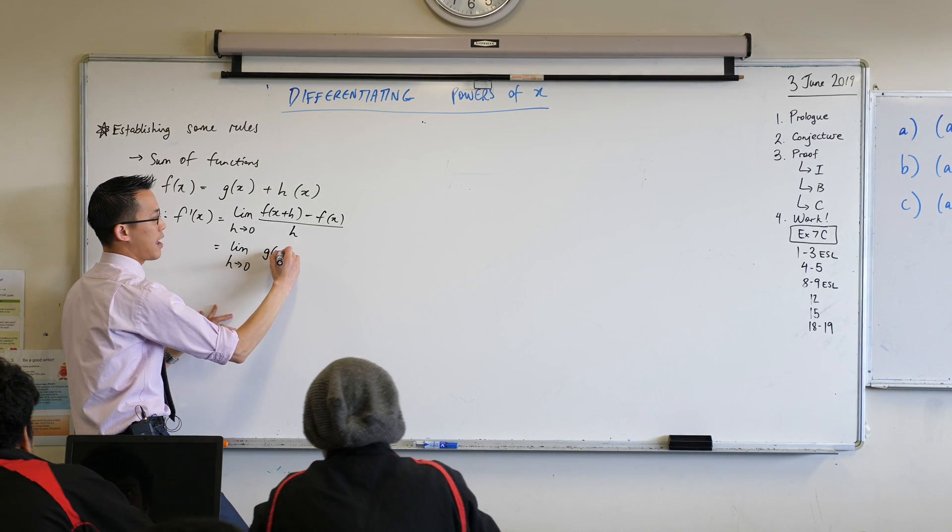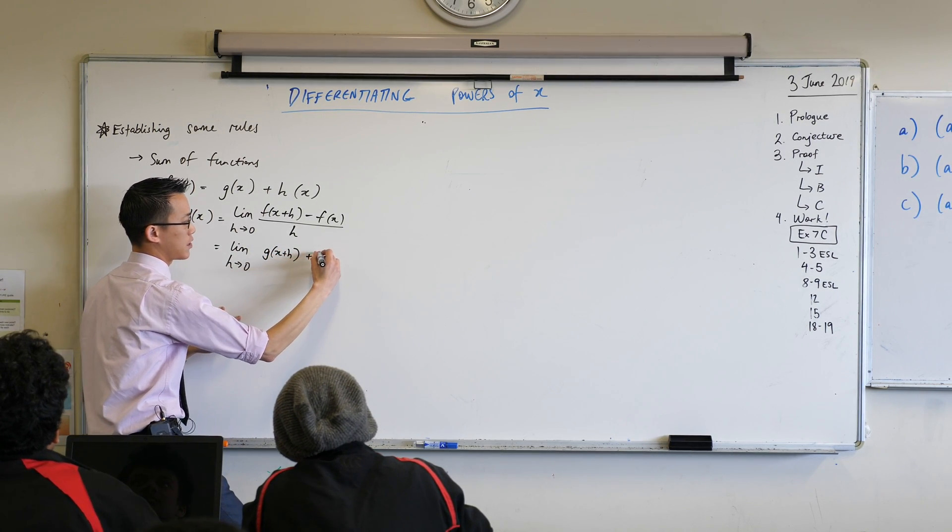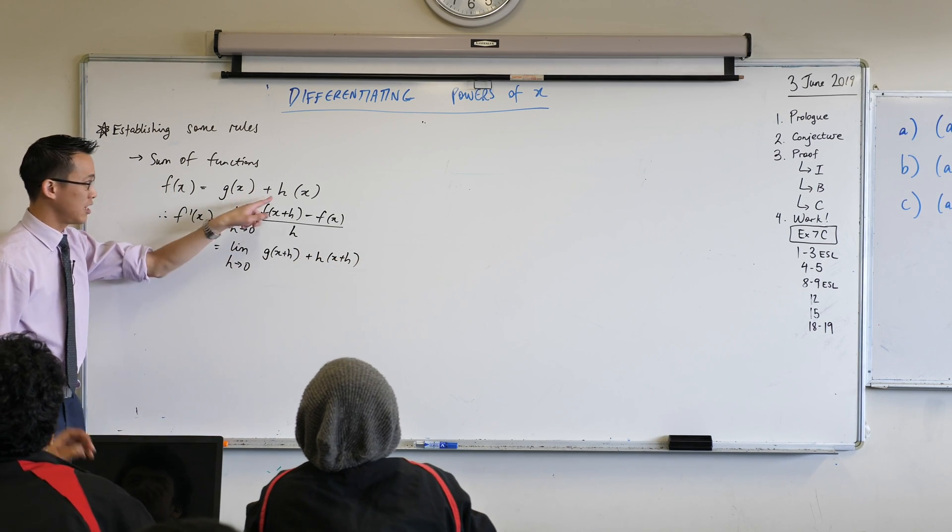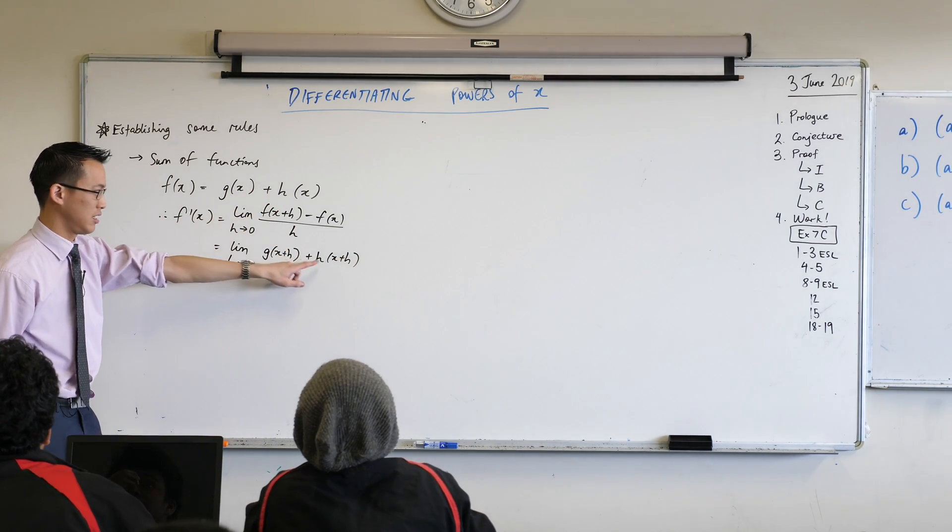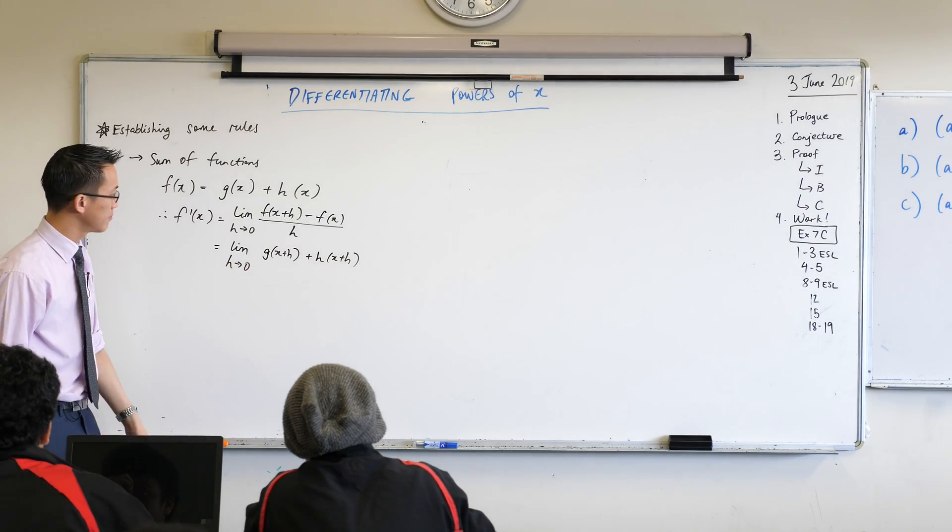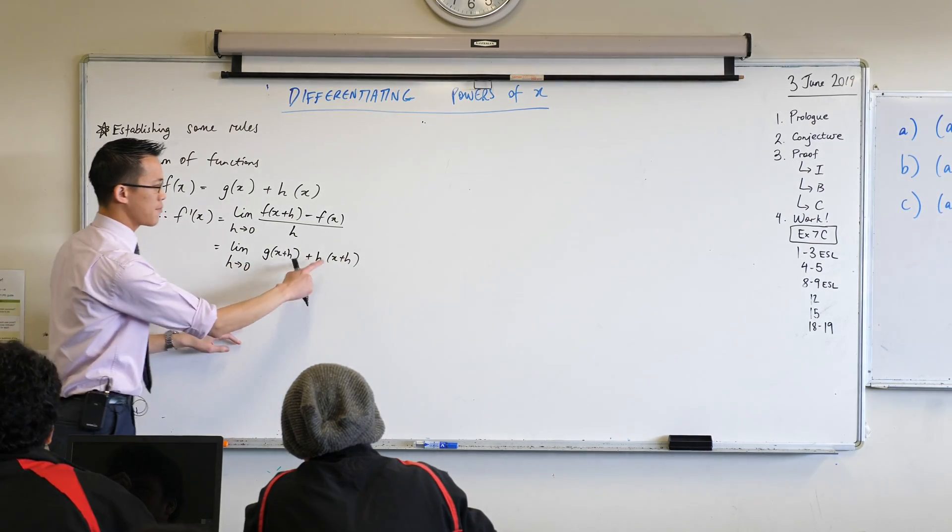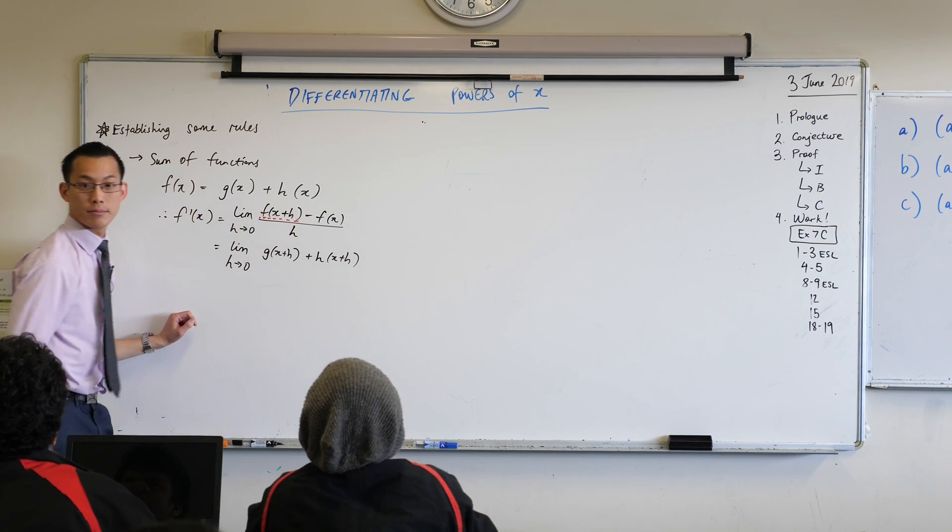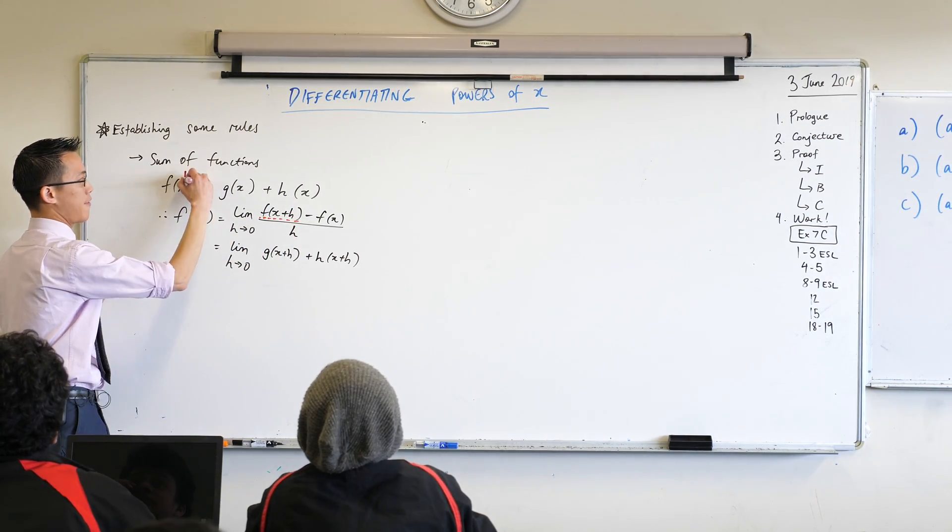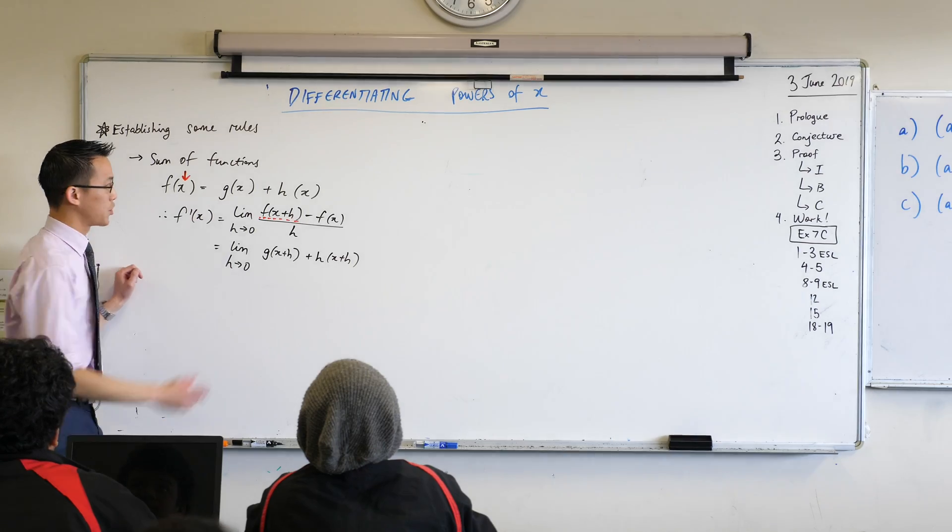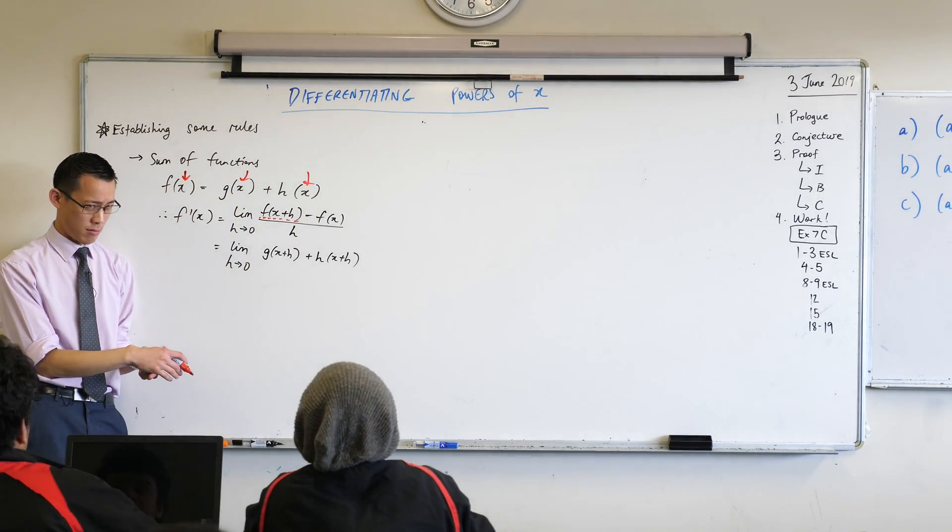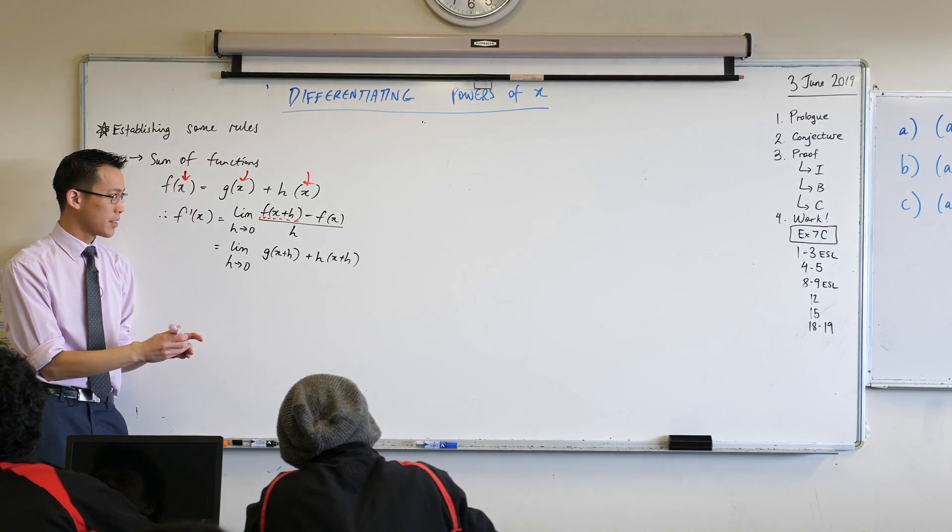g(x+h) plus h(x+h). Do note, my h here is just the name of a function which is actually different. Good question, so I'm just dealing with this first term here. By definition what that means is everywhere you saw x, which at the moment is here and in here, replace that with an x+h. Is that okay? Staying with me? All right.